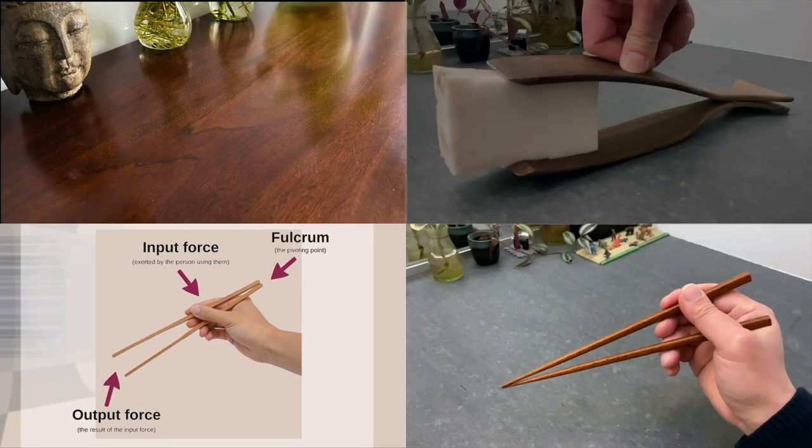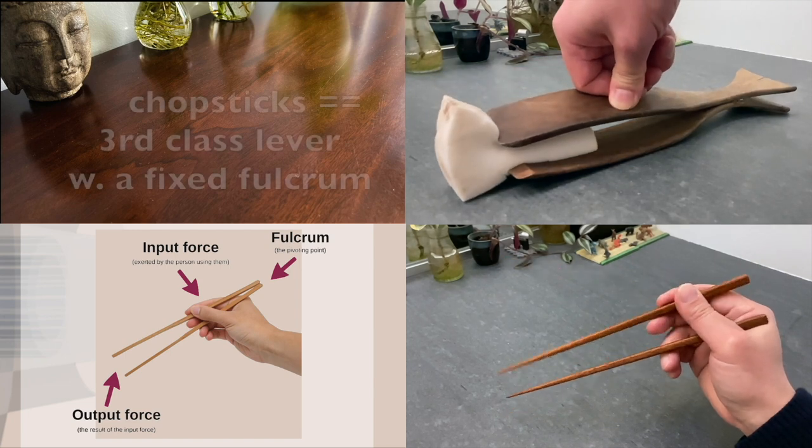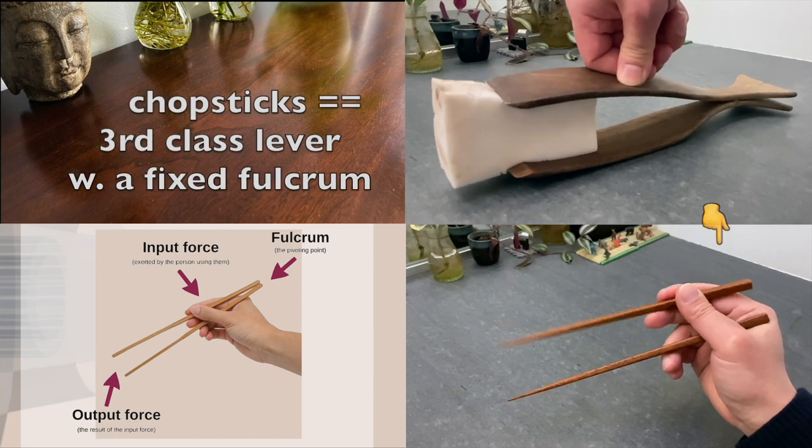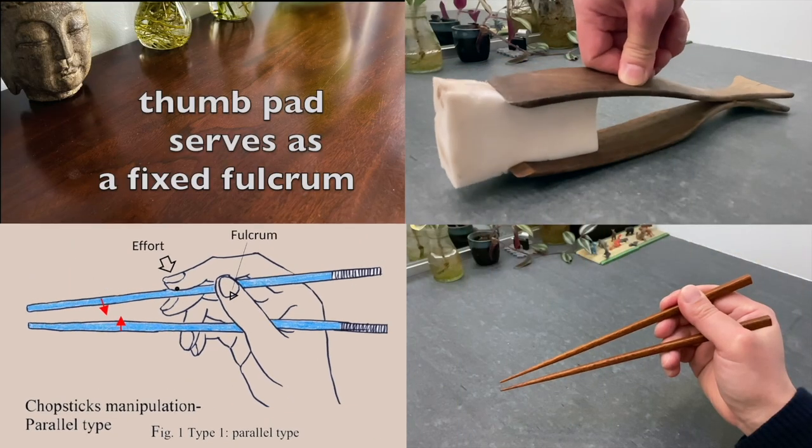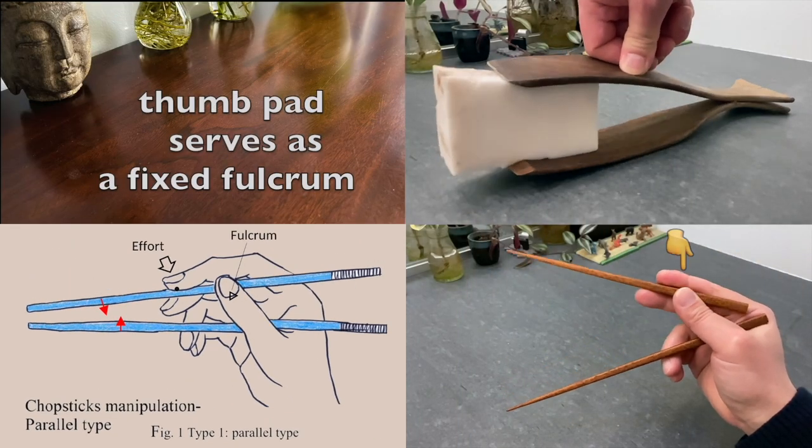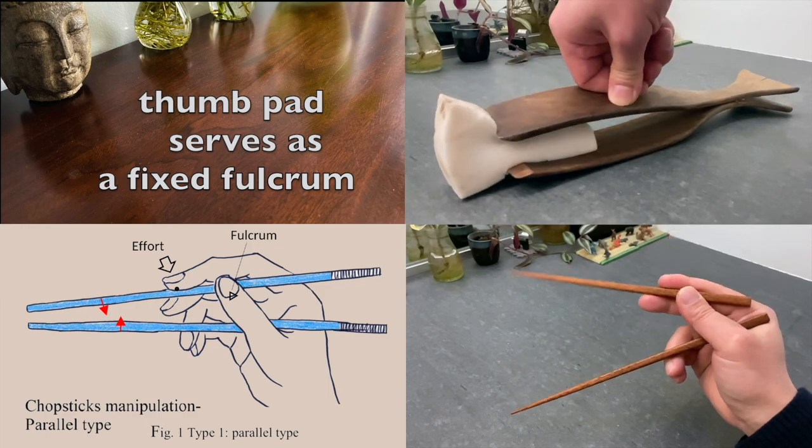They taught you in grade school that chopsticks are third-class levers with a fulcrum at the rear end. Some researchers believe that the thumb path serves as a fixed fulcrum.